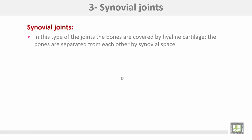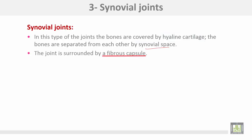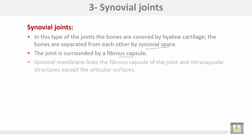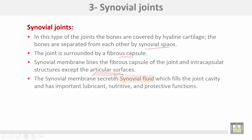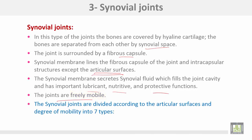The third type of joint is the synovial joint. In this type, the bones are covered by hyaline cartilage and separated from each other by a synovial space. The joint is surrounded by a fibrous capsule, and the synovial membrane lines the fibrous capsule from inside and covers all intracapsular structures except the articular surfaces. The synovial membrane secretes synovial fluid, which fills the joint cavity and has important lubricant, nutritive, and protective functions.